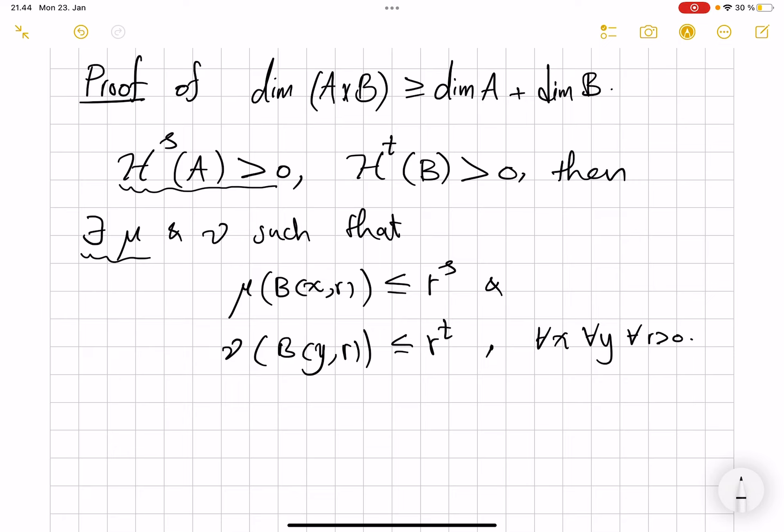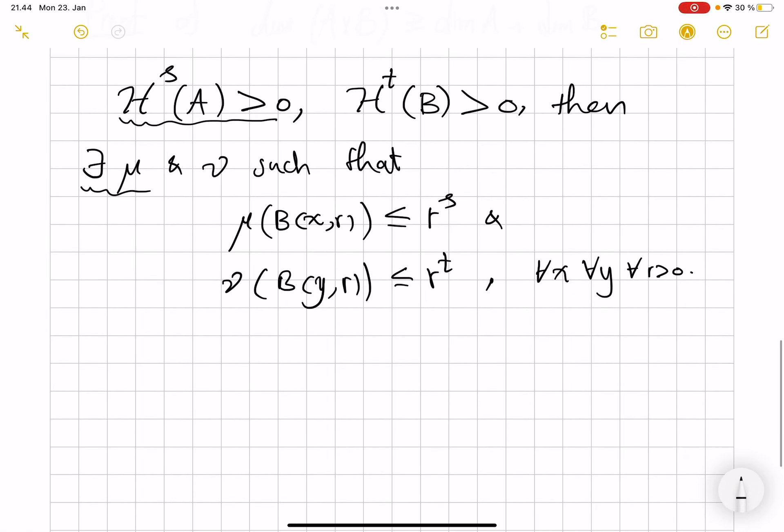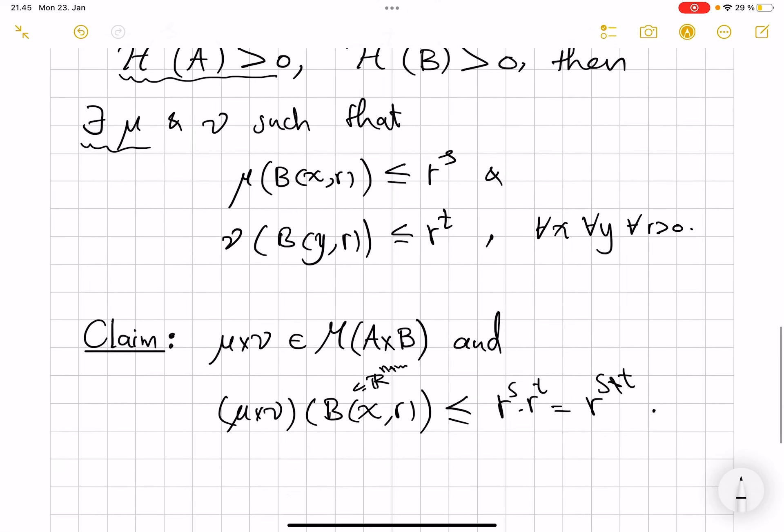Now, we want to go in the backward direction for the product set. So first we build the Frostman measure for the product. So claim, which is just a matter of definitions. This product measure is actually in the set of measures M(A × B). It's finiteness, it's compact support, and also this upper bound that this measure, the product measure, applied to any ball in the space R^(n+m), is bounded by r^s times r^t, which is just r^(s+t). So all of these claims follow from just definition of the product measure.